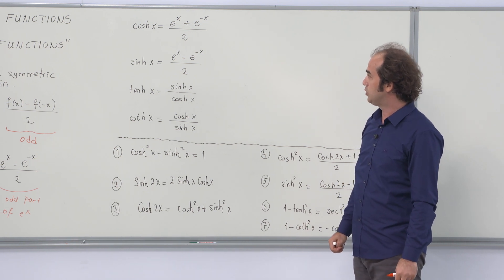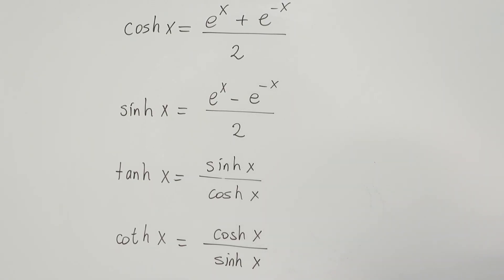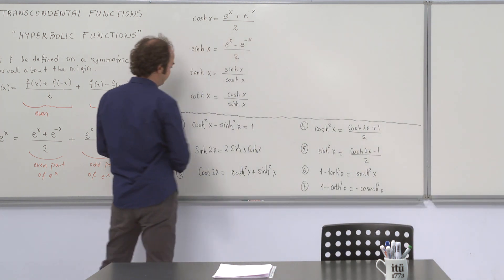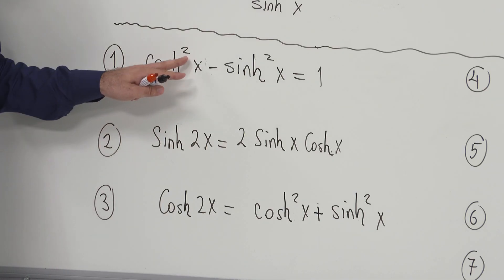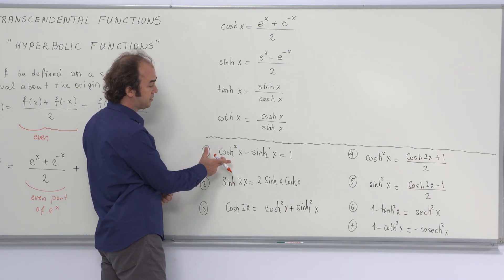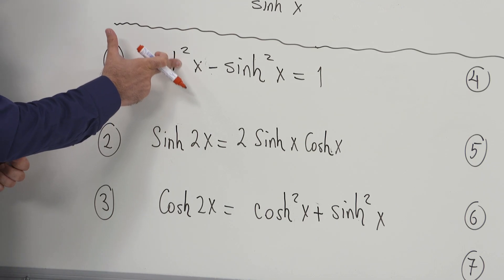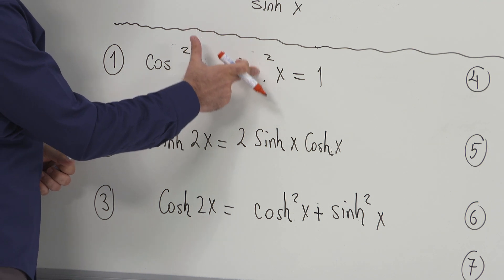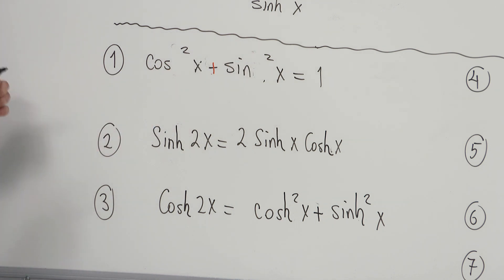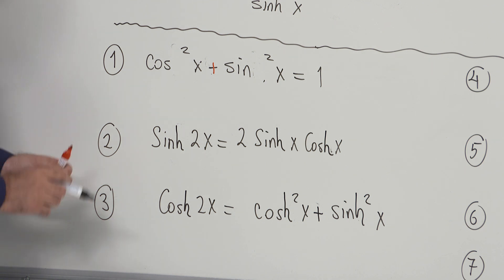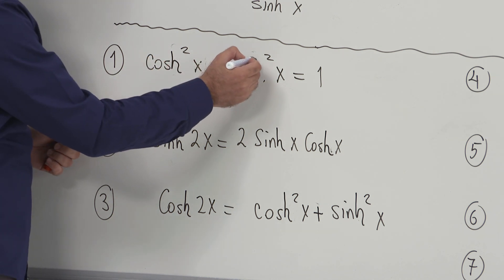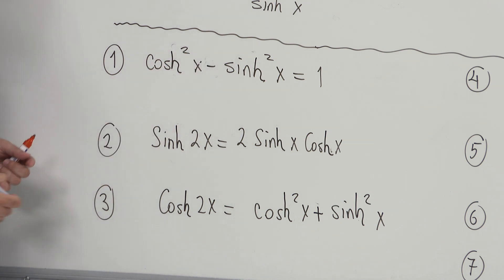After defining these, you can also show that these hyperbolic functions satisfy identities quite similar to the trigonometric functions. For example, the first identity says hyperbolic cosine squared minus hyperbolic sine squared equals one. This reminds us of the basic trigonometric identity, where cosine squared x plus sine squared x equals one. In the case of hyperbolic functions, that basic identity converts to this identity with a minus sign.